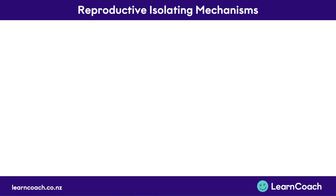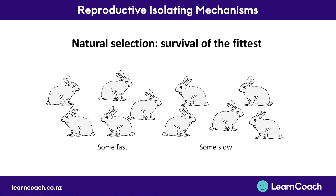Welcome to this video on reproductive isolating mechanisms. In the first video of this series we looked at natural selection and we learnt about survival of the fittest — that is, the animals that are best adapted to their environment are the ones that are most likely to survive and therefore have offspring.